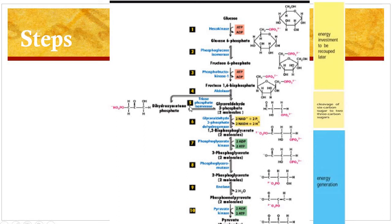In step number 5, dihydroxyacetone phosphate is isomerized to glyceraldehyde-3-phosphate by the enzyme phosphotriose isomerase. That means at this step, glucose is cleaved into 2 molecules of glyceraldehyde-3-phosphate. After this step, 2 molecules of all products are produced at each subsequent step.